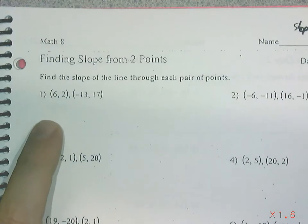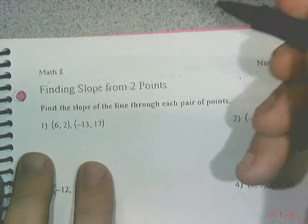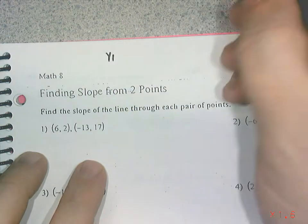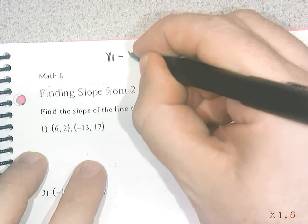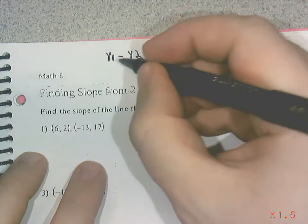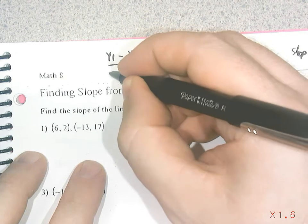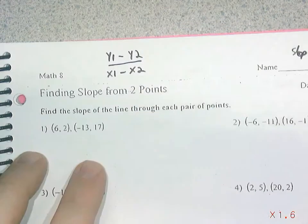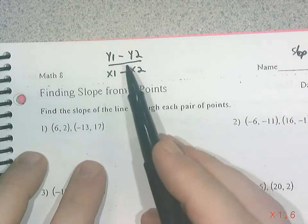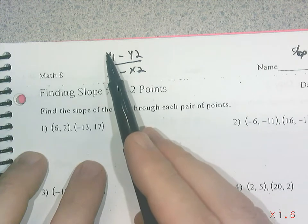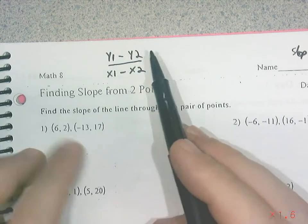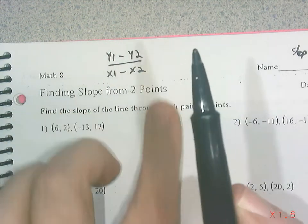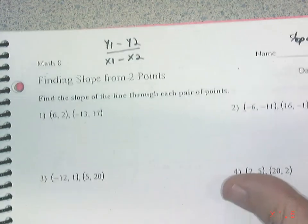So if I want to find the slope from two points, the formula is: take the two y-coordinates — y1 minus y2 — and put that over x1 minus x2. It doesn't really matter which order you use, but if you put y2 first, you need to put x2 first. Always subtract coordinates from the same corresponding points.